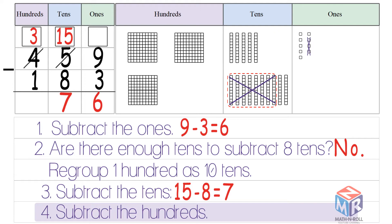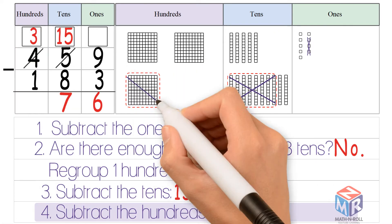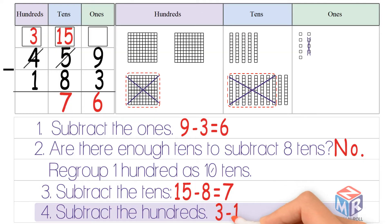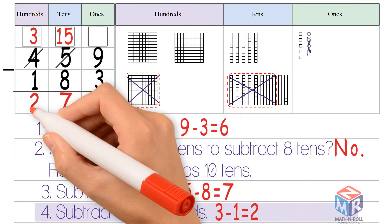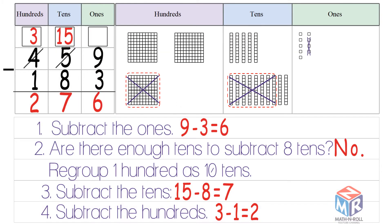Lastly, we subtract the hundreds. 3 minus 1 is equal to 2. So 459 minus 183 is equal to 276.